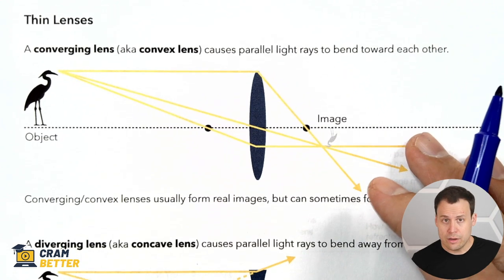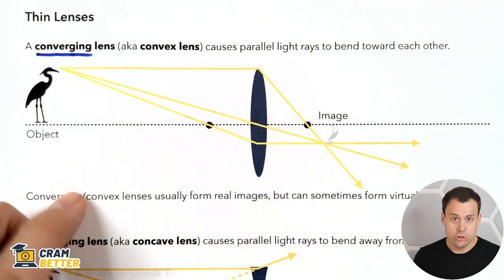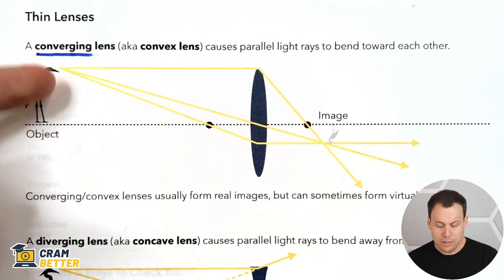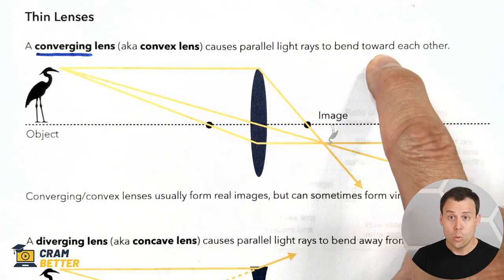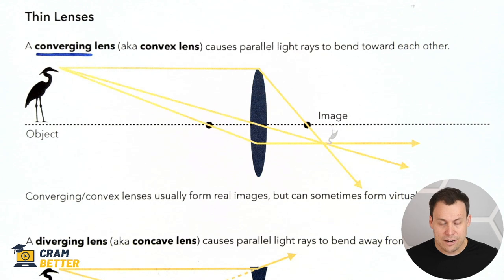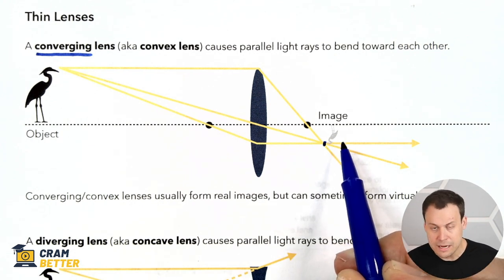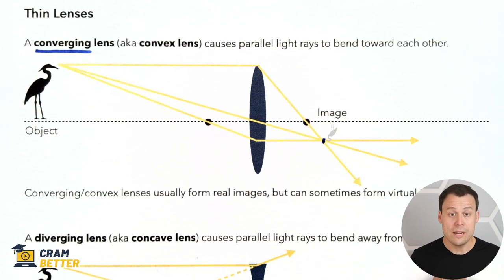How do lenses make real and virtual images? The first type is the converging lens — most of the time we'll call it converging, but you might also see it called convex. That's your football-shaped lens when viewed from the side. Light rays come in from an object and converge together — they bend toward each other. When they meet at a point, the image you get is real. In this case it's smaller and upside down. Converging lenses usually make real images, though sometimes they can make a virtual image.